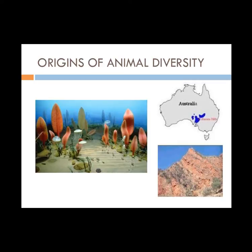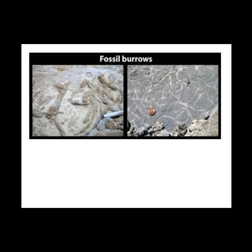The fossil record and molecular studies support the theory that many animal phyla evolved rapidly over 40 million years during the late Precambrian and early Cambrian eras, about 565 to 525 million years ago. The Ediacaran period was the last period of the Precambrian era, named for the Ediacaran hills in Australia where fossils were first discovered — about 565 to 543 million years old. There is evidence that animal life began much earlier: in 2000, researchers discovered fossilized animal embryos in Chinese strata about 570 million years old, and in 1998, paleontologists discovered possible fossilized animal burrows in rocks about 1.1 billion years old. Molecular systematics also supports animal origins about a billion years ago.